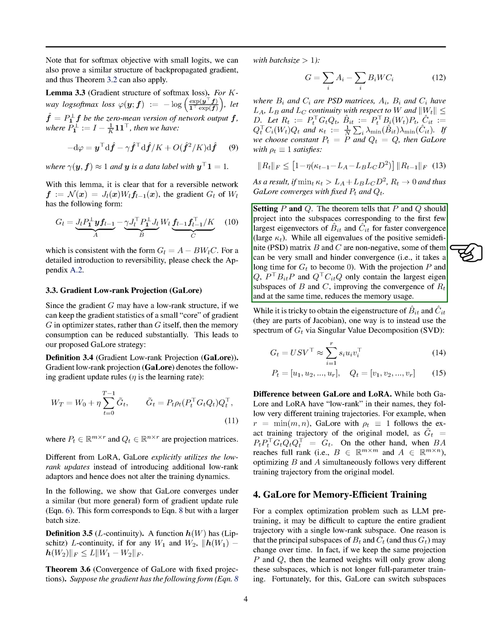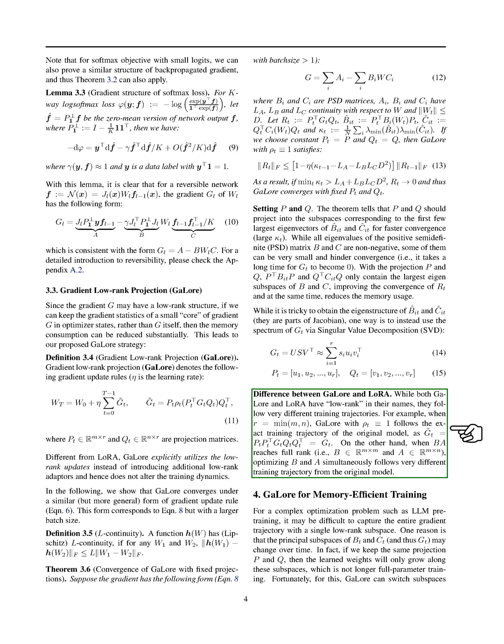GaLore differs from LoRA in training trajectories, especially when R equals min(m, n). GaLore maintains the original model's trajectory with certain settings, while optimizing B and A simultaneously leads to a distinct trajectory. GaLore is designed for memory-efficient training, allowing for switching across low-rank subspaces to adapt to changing principal subspaces of B_T and C_T over time without increasing memory usage.